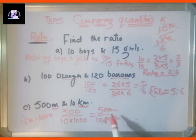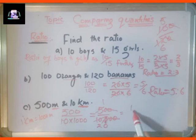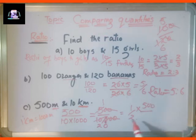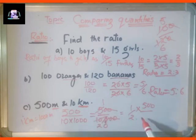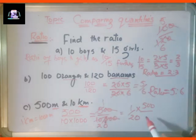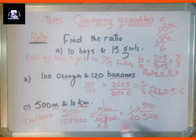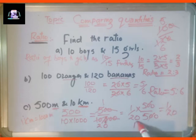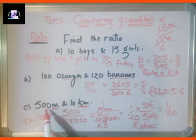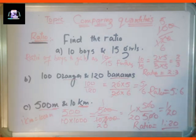Now we simplify 500 divided by 10,000. The two zeros in 500 and 10,000 cancel, leaving 5 divided by 100, and then 5 cancels to give 1 divided by 20. So the ratio of 500 meters to 10 kilometers is equal to 1 is to 20. This is how we can compare quantities and find the ratio between two quantities.